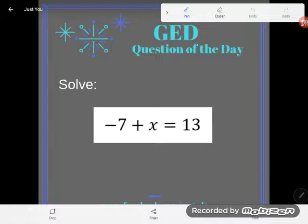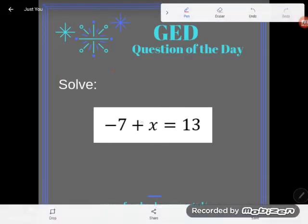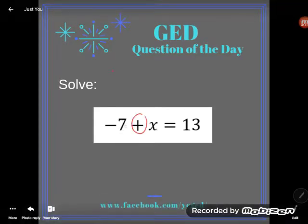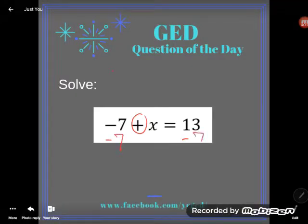So I see this equation: negative 7 plus X is equal to 13. What most students do wrong is they go, oh look, this 7 and this X are adding. I see the plus in between them, so the opposite of adding is subtracting. So I'll subtract 7 from both sides.